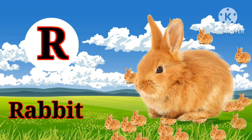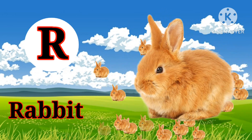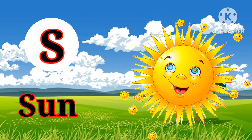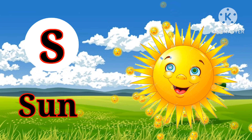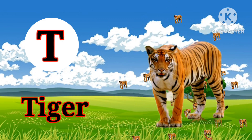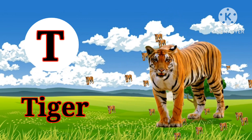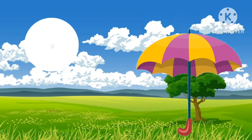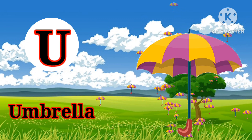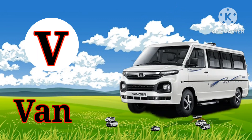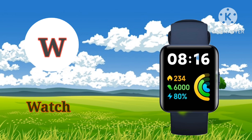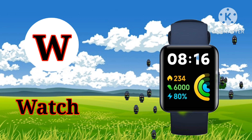R for rabbit, S for sun, T for tiger, U for umbrella, V for van, W for watch.